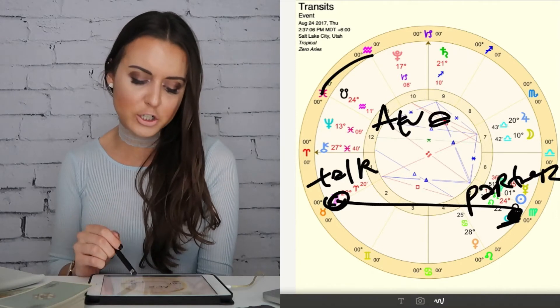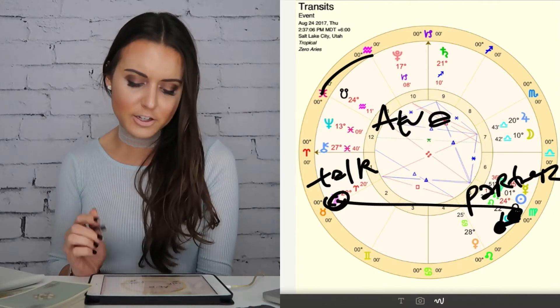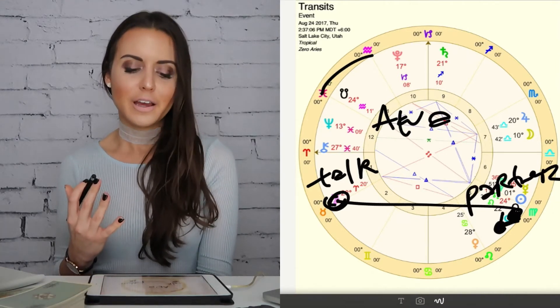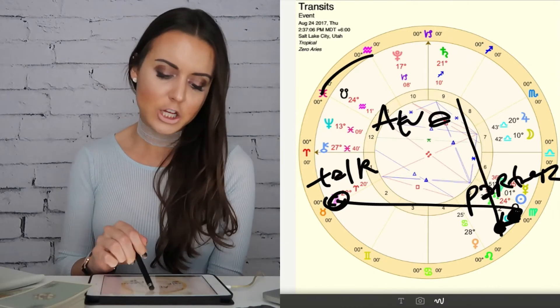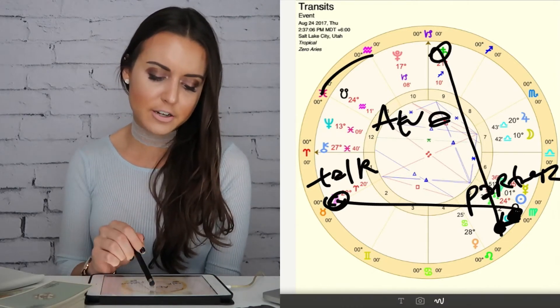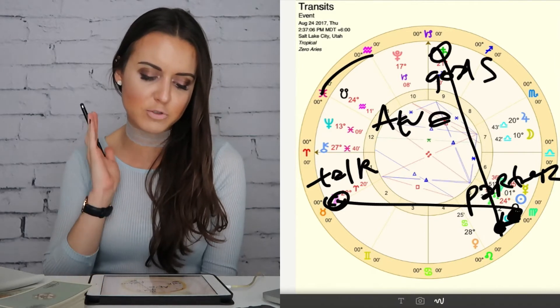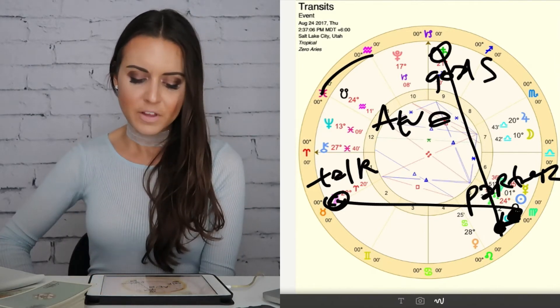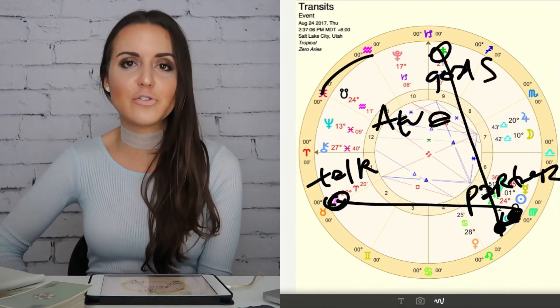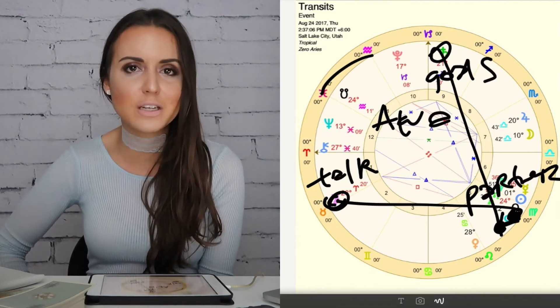We also have Mars in your seventh house of partners making a trine to Saturn. Saturn's in your 11th house of goals, where you see your life going, your dreams and aspirations and ambitions. I think you're trying to figure out how you can work with other people in a really disciplined and dedicated way.